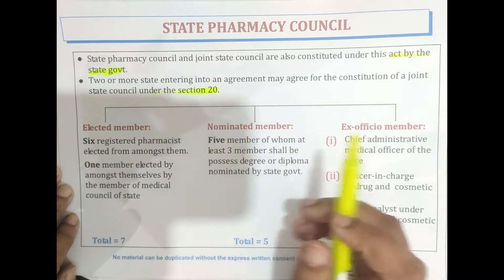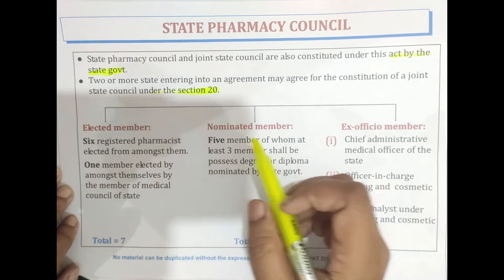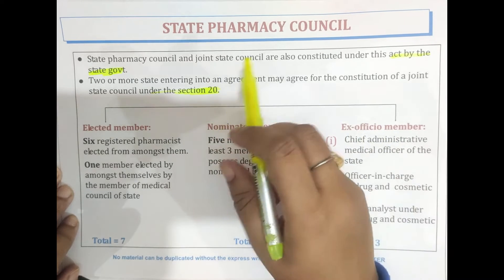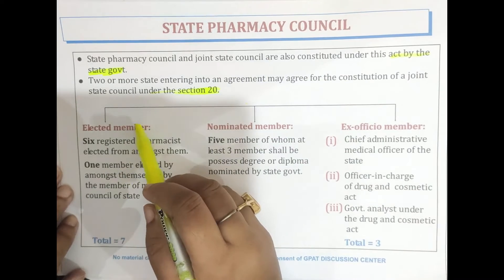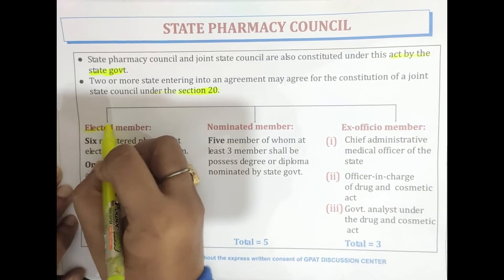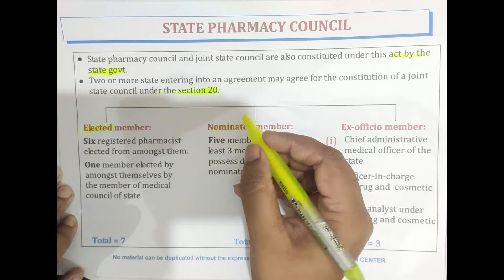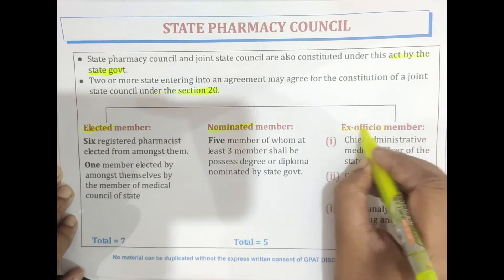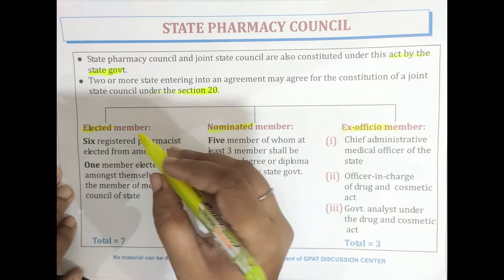Now coming toward the various types of members in the constitution of a State Pharmacy Council. It is basically made up of three types of members: elected members, nominated members, and ex officio members.